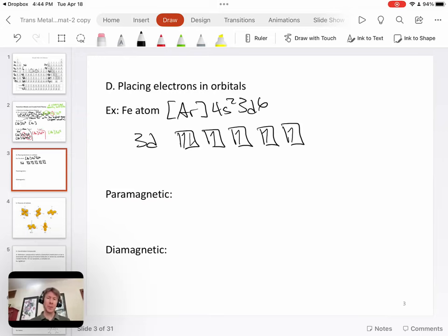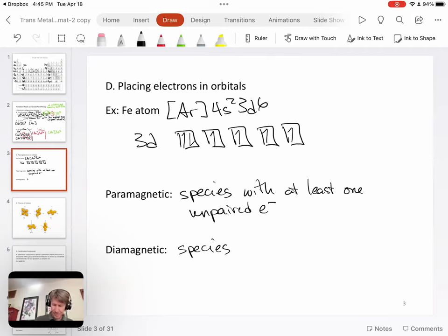Now let's review or teach you about the difference between paramagnetic and diamagnetic. The first thing we're going to learn is that you are paramagnetic, or you're a paramagnetic species, if you are a species with at least one unpaired electron. We can see here that iron is going to be paramagnetic with four unpaired electrons. And diamagnetic would be a species with all paired electrons.